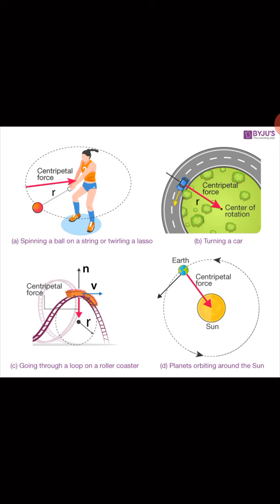In image C, in a roller coaster, if you complete the loop it gives you a circle. So if you are at the top position on a roller coaster ride, the force which keeps you stable on the loop is nothing but the centripetal force acting towards the center of the loop.